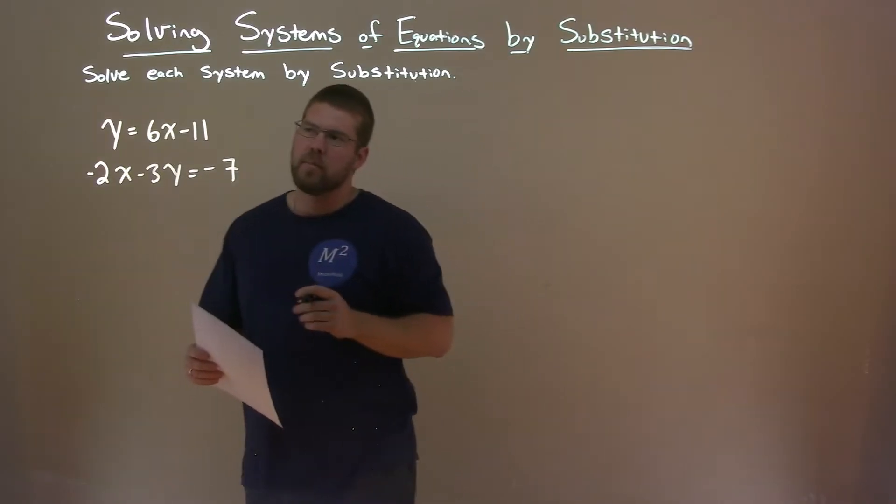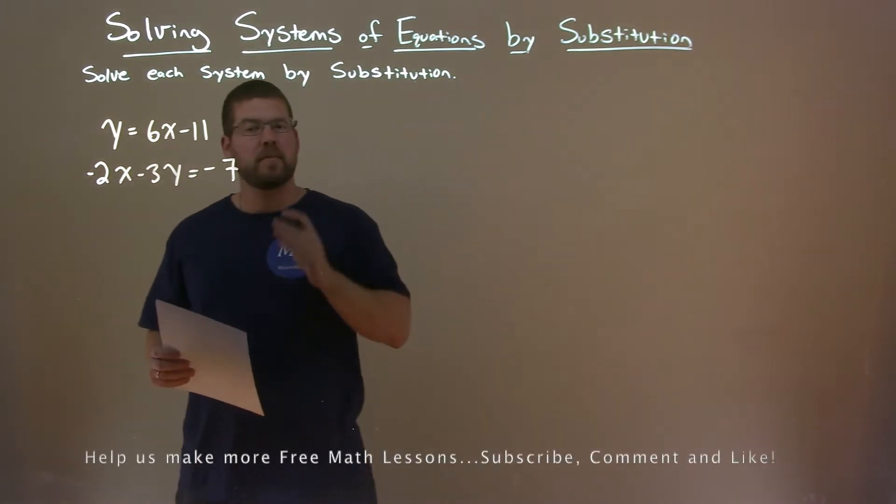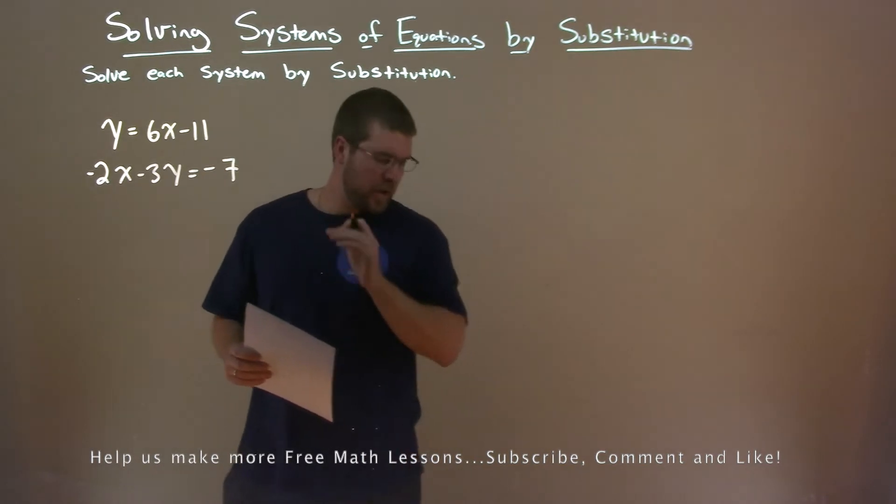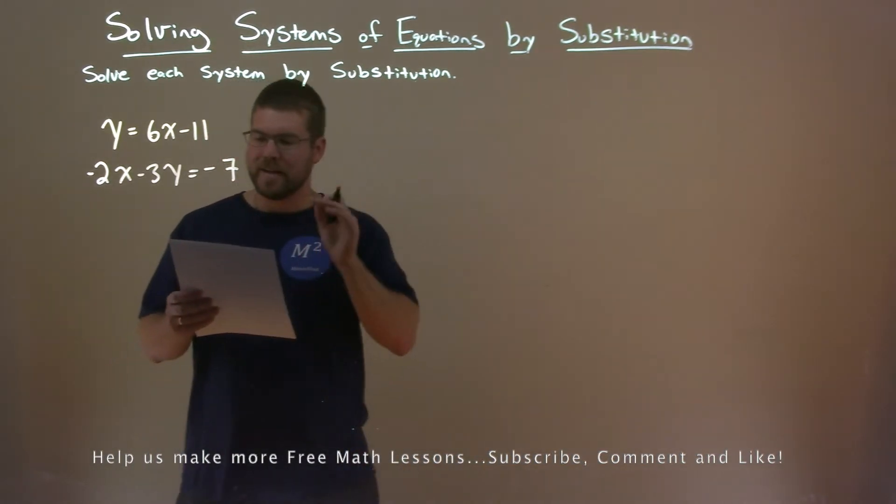We're given this problem: y equals 6x minus 11, and minus 2x minus 3y equals negative 7. We need to solve this system by substitution.